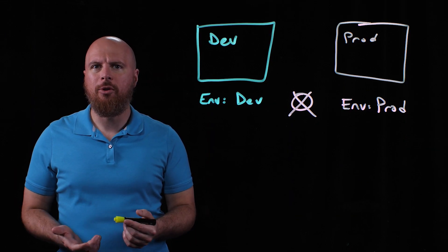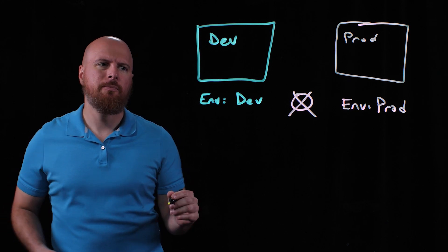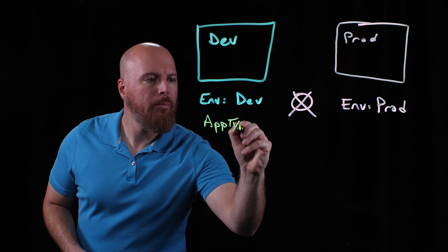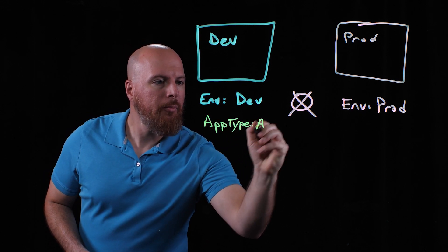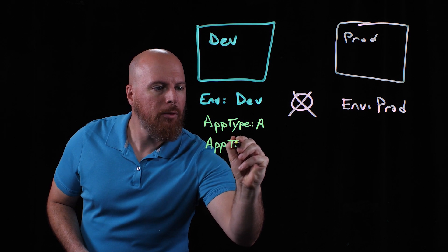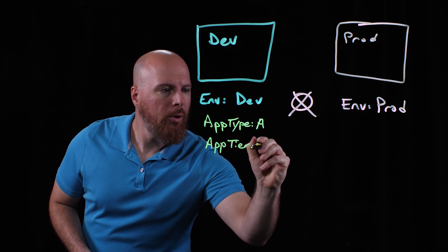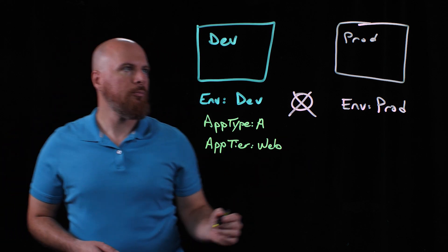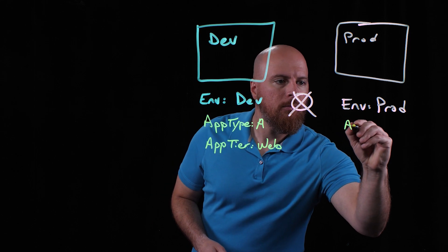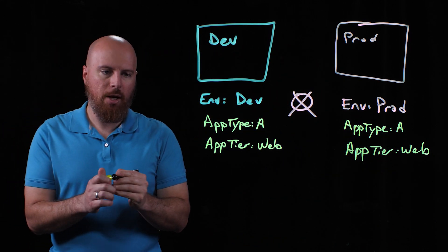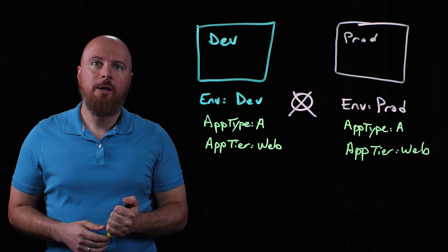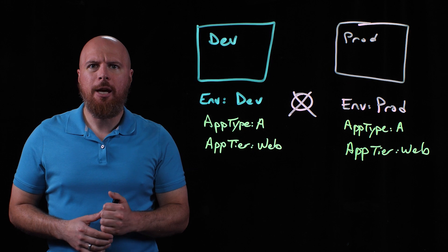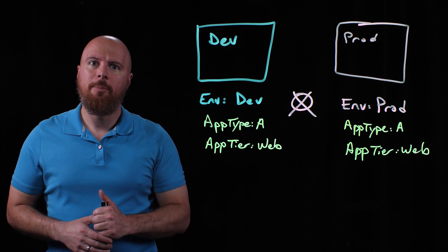Let's add a few more categories to these VMs to create a more granular policy. The development VM is part of application type A and the application tier web, making it a development web server part of application A. The production VM is also part of app type A and is a production web server. Let's look at how we can use an application policy to secure traffic in this application.